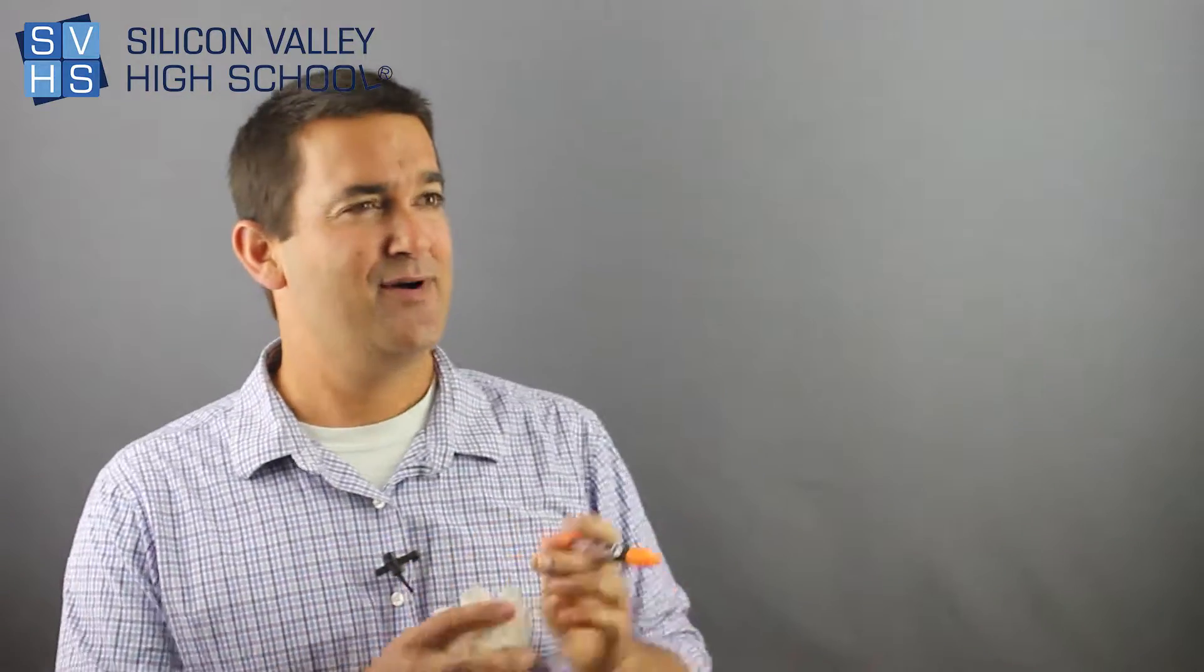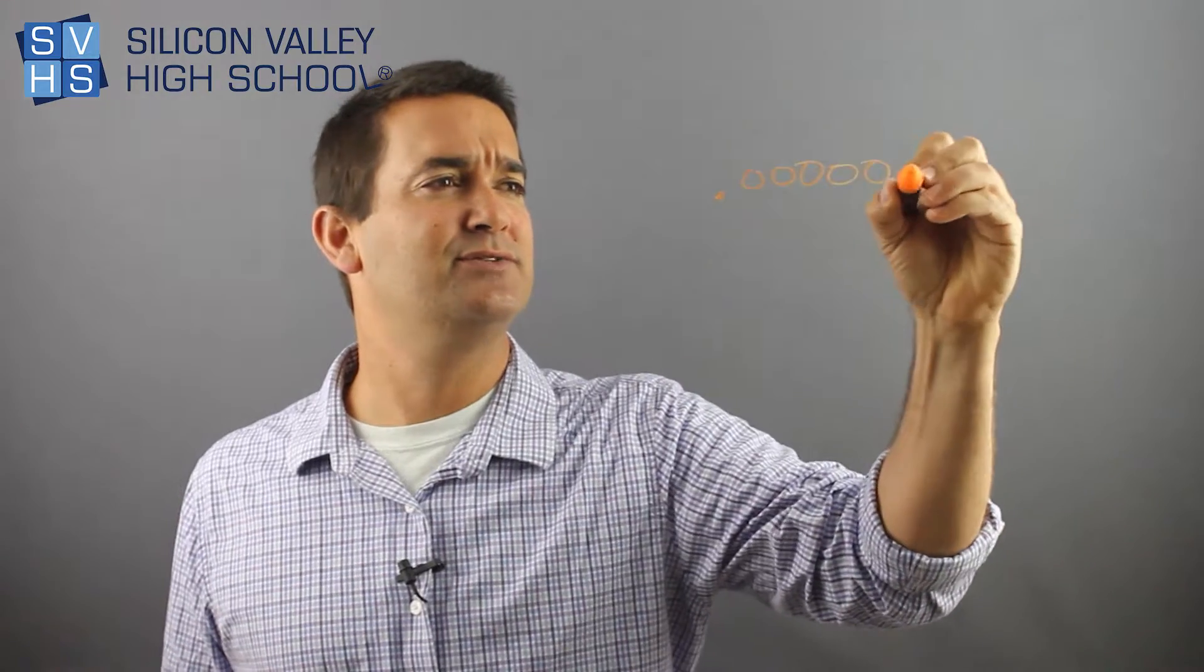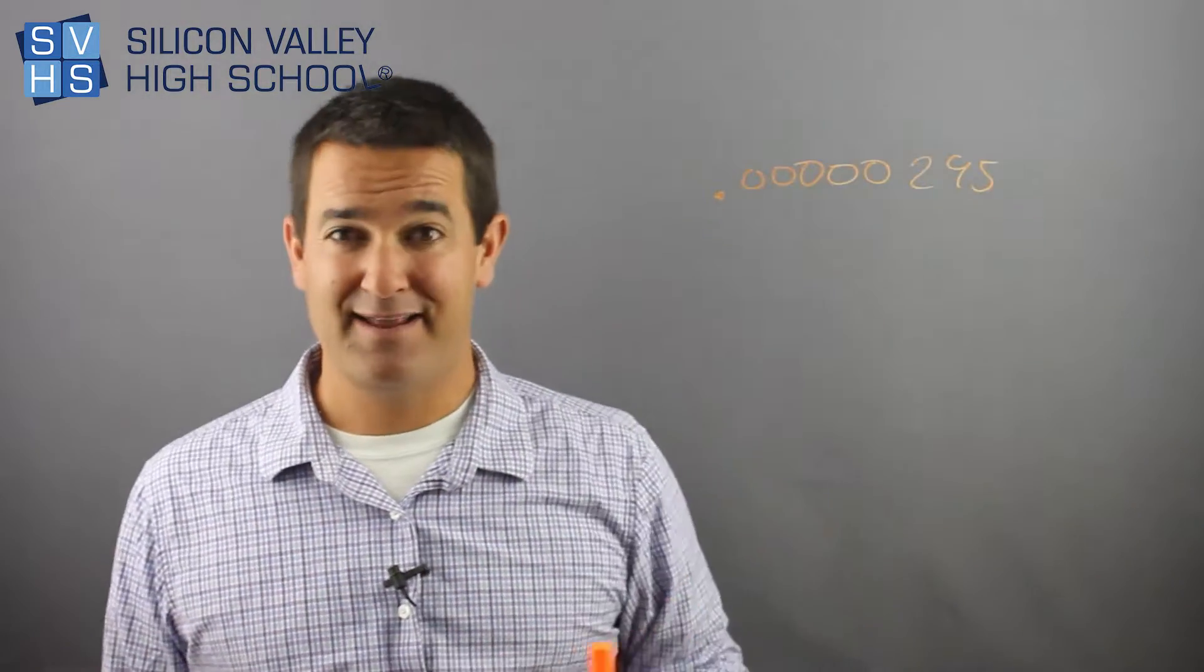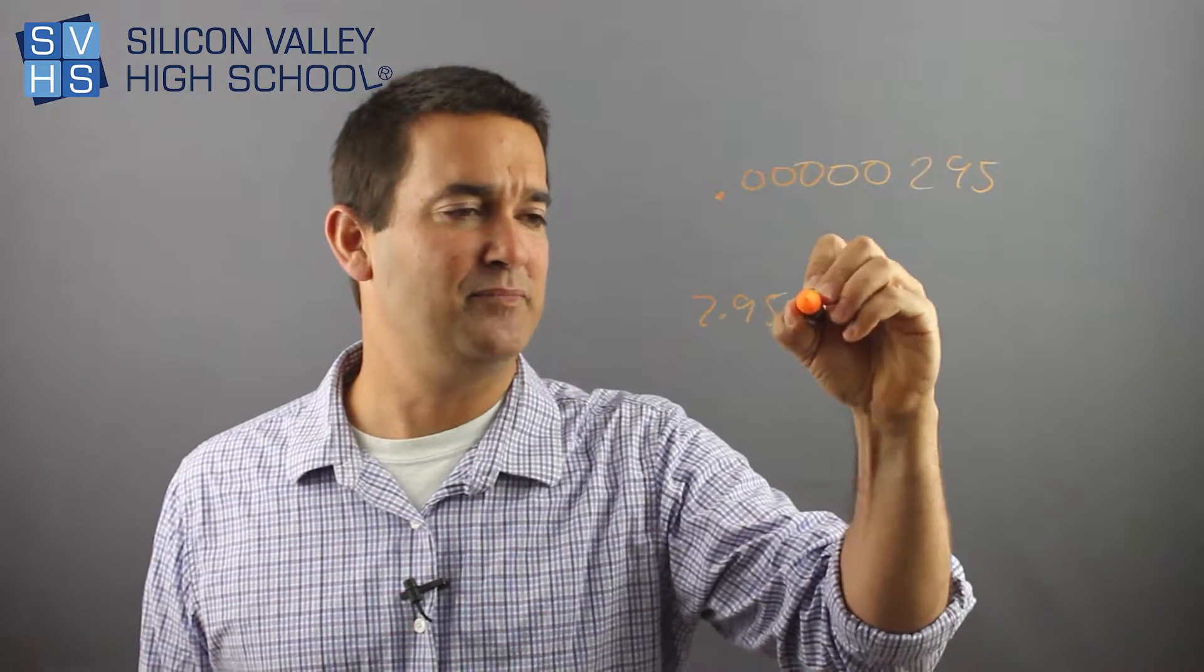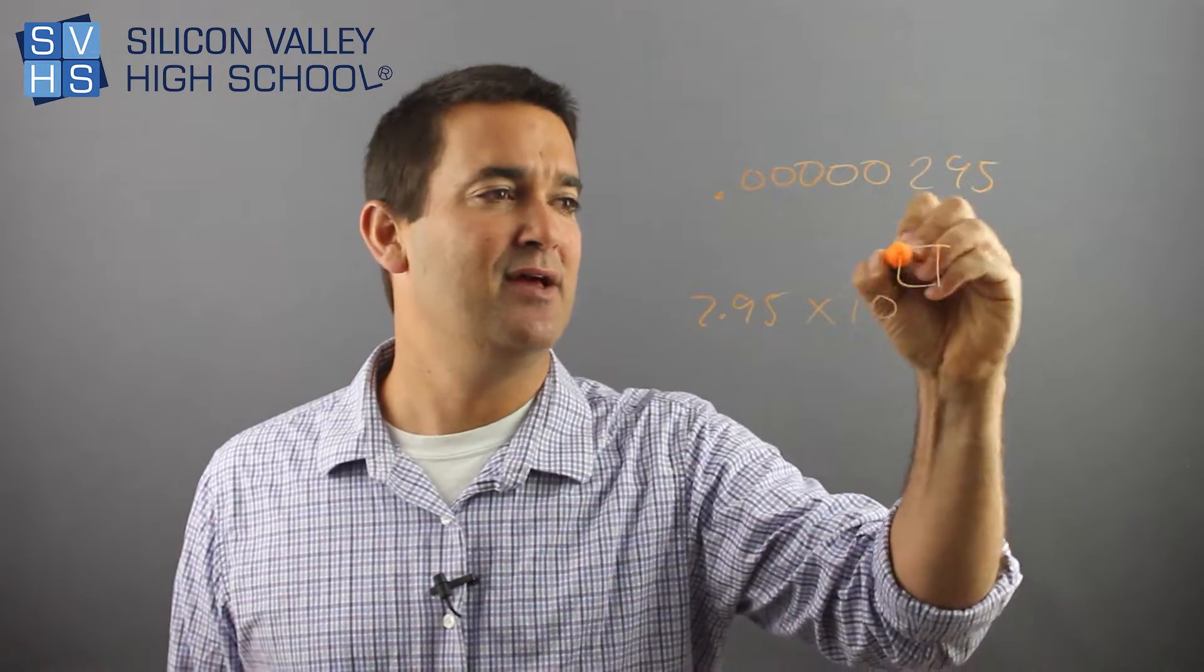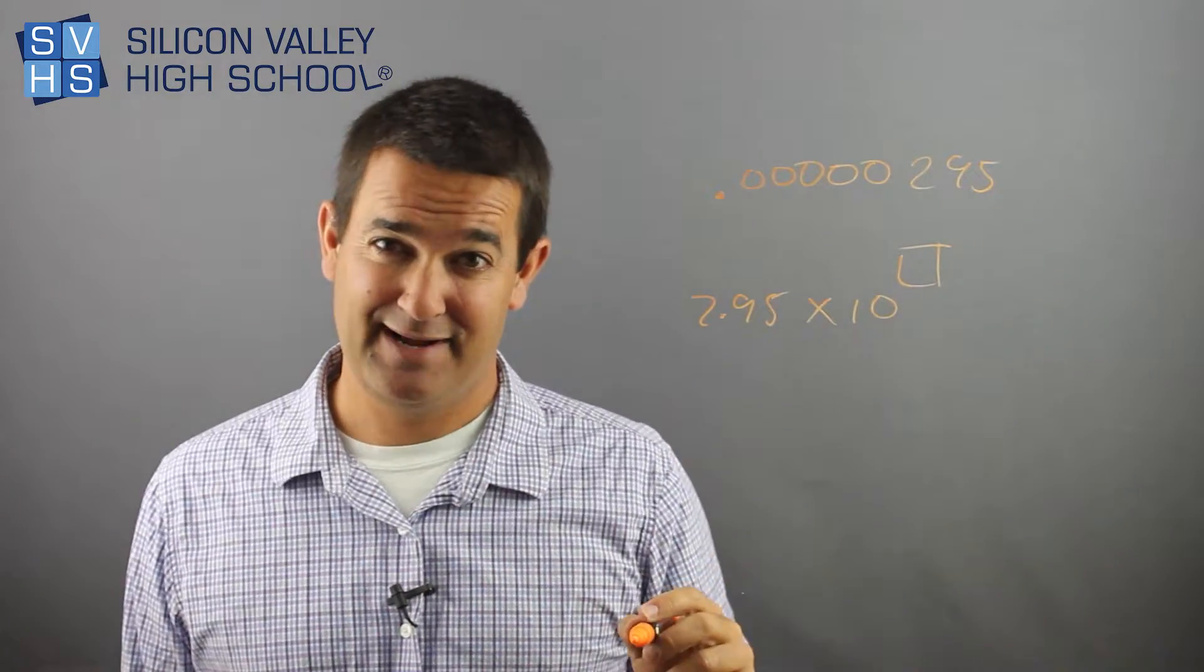Okay. Let's do another example. Let's do a tiny number. Now, you have, let's see, 0.0000295. Again, before you even start, you're going to write 2.95 times 10 to the something. Why 2.95? Whole number, then a decimal.